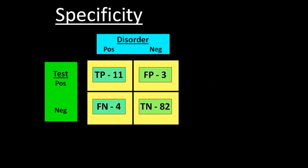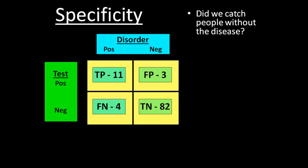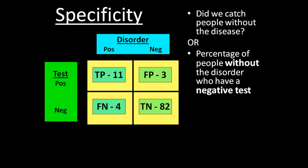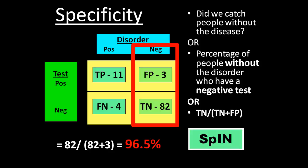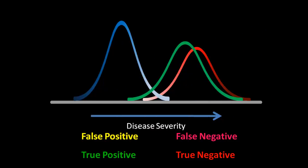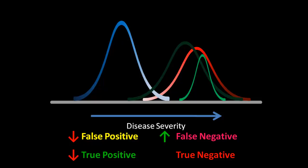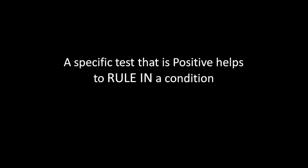The next statistic is specificity. Specificity answers the question: did we catch people without the disease on accident? The other way to think of it is the percentage of people without a disease who have a negative test — true negatives divided by true negatives plus false positives. In this case, our specificity is 96.5%. A very specific test tries to make sure we're only catching people with the disease, so it has very few false positives but also fewer true positives. It will, however, have more false negatives and more true negatives. The result is that a specific test that's positive makes us feel pretty sure the patient has the disease and rules in a condition. But if a specific test is negative, the patient may still have the disease.